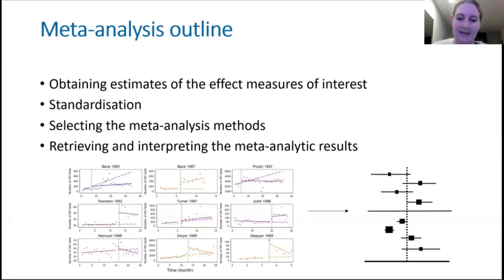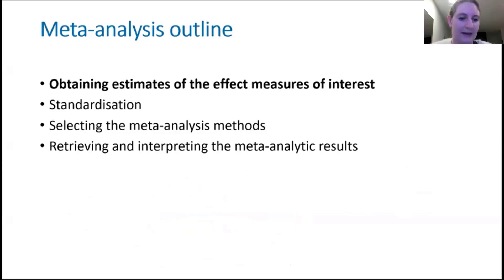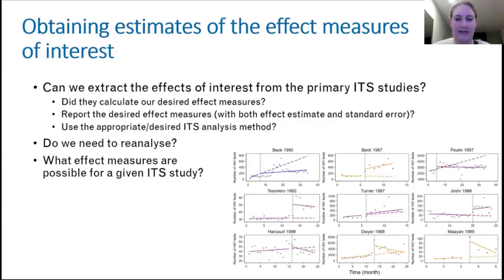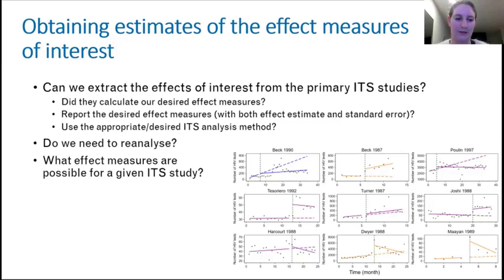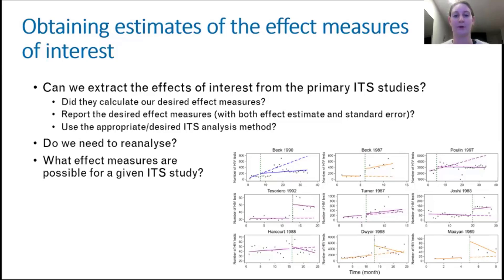We're going to start off with obtaining the effect measures of interest. As Simon mentioned earlier, systematic reviewers need the estimate and the standard deviation. When we get our primary studies, we need to determine whether or not we can get the effects we're interested in. It could be that they've fitted a different model that doesn't give us the effects we're interested in, or a different model structure.